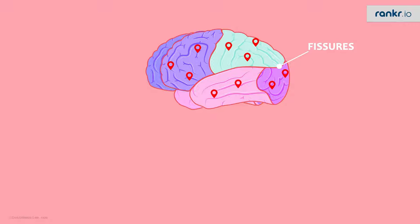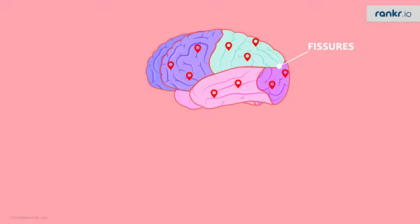That is the reason why a signal that enters the brain is directly transferred to the specific area in a lobe for processing. At this stage, we don't really need to look at the areas in each lobe, but what we can discuss is the functions of the lobes in general.